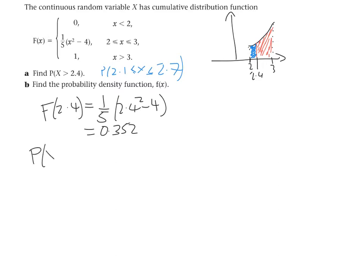So to find the probability that x is greater than 2.4, we need to do 1 minus f of 2.4. And f of 2.4 is 0.352. So our final answer should be 0.648.